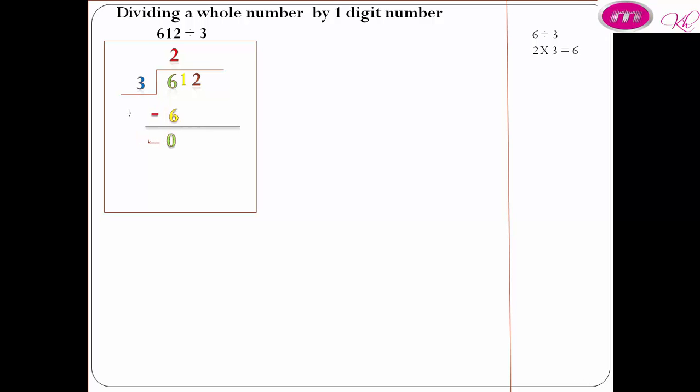Bring down 1. 1 is less than 3. We cannot divide 1 by 3. It is less than 3, so we put 0 and bring down 2.